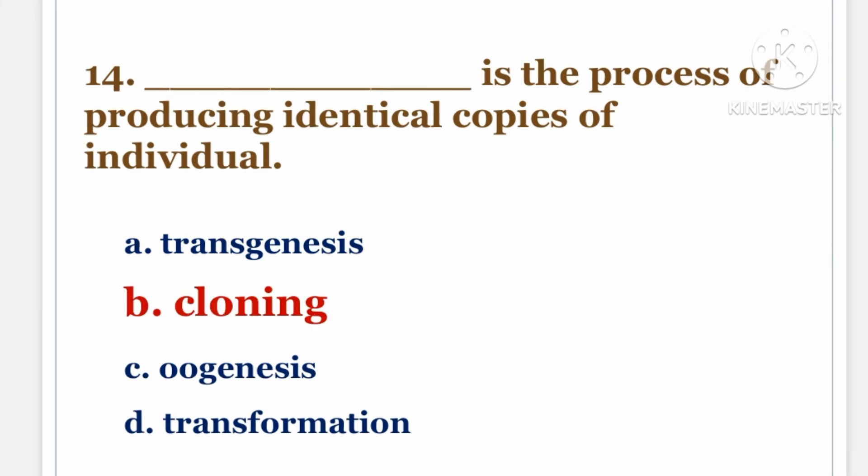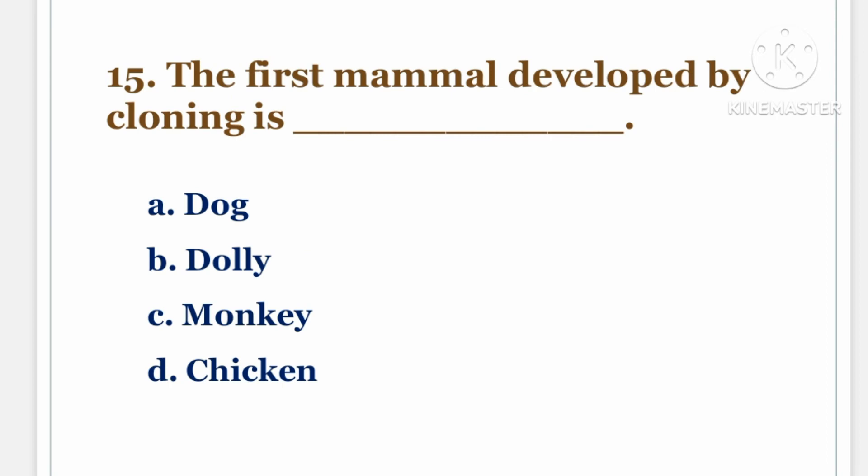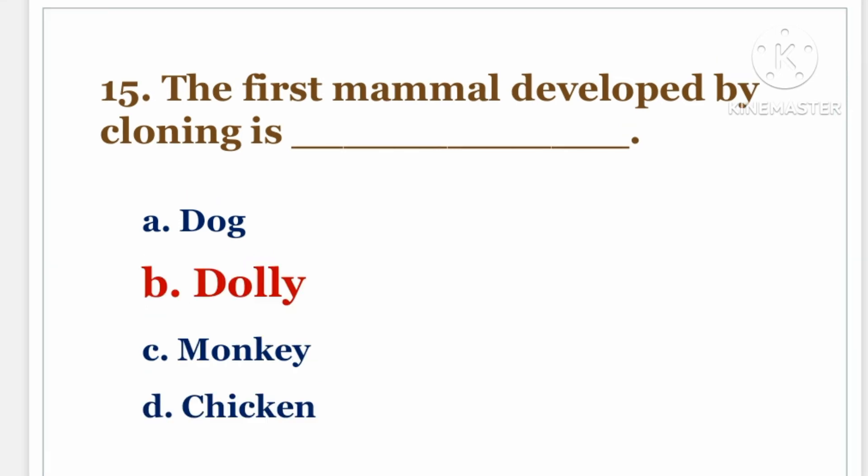Next question. The first mammal developed by cloning is DASH. Options: A. Dog, B. Dolly, C. Mungie, D. Chicken. The answer is B. Dolly.